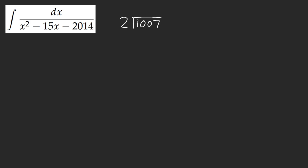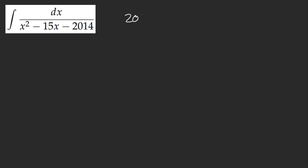That is not correct — I don't know why I wrote it like that. 2014 is 2 times 1007. Now, 1007 — how am I supposed to know this is divisible by some number? I don't know the factors of this. Definitely not divisible by 7. But how am I supposed to know the factors of 2014?